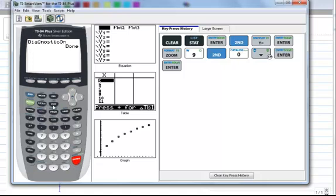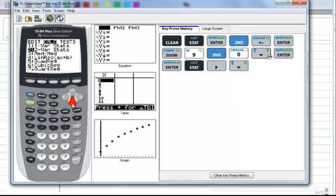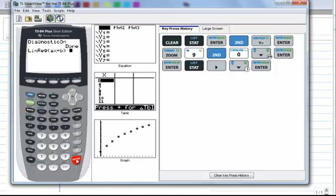So let's go ahead and run a linear regression. Stat, calc, go down to linear. Press enter. Now, by default, it always chooses list one and list two. So if that's where your things are, you're fine. Press enter. And there you've got the equation.